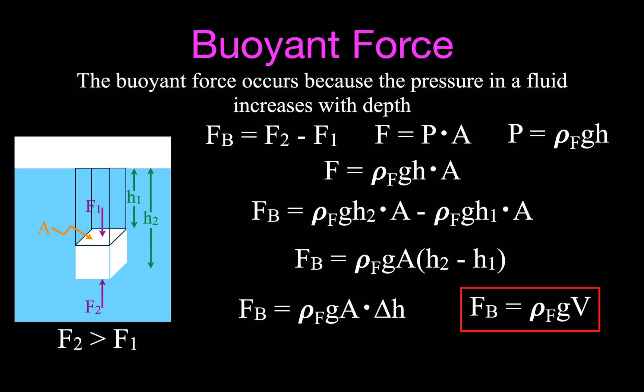In this case we used a rectangular object, but it doesn't have to be rectangular — it could be round or some irregular shape; we just need to know its volume. This is the equation we can use to calculate the buoyant force: F_buoyant = density of fluid × g × volume of object.